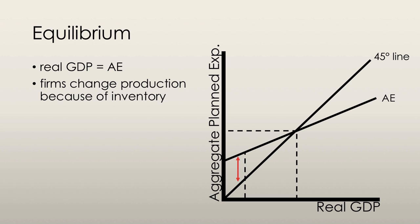If we're at a point above the equilibrium — so planned expenditure is below real GDP — then firms' inventories rise by the difference created between real and planned expenditure. So production will decrease until equilibrium is reached. If production decreases, then obviously we have a decrease in real GDP. But because firms have already planned this, their aggregate planned expenditure for the entire economy decreases as well. And so that keeps happening until we reach the point of equilibrium.